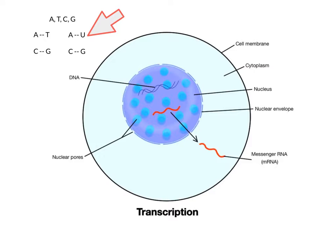Remember, the base pair rules of DNA are adenine bonds to thymine (A to T), and cytosine bonds to guanine (C to G). But in RNA, the base pair rules are a little different. Adenine bonds to uracil (U), not thymine — A to U — and cytosine bonds to guanine (C to G), which is the same as in DNA. So whenever you have uracils in a nucleotide sequence, you know you are working with some type of RNA molecule.